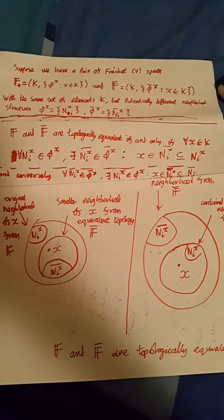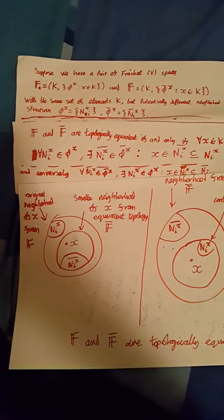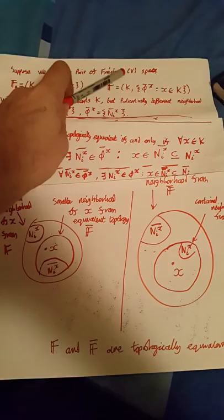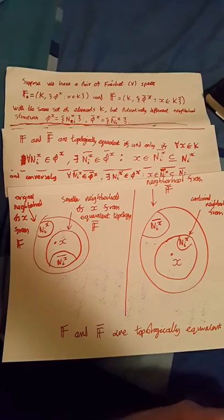One of the things topologists are most interested in is: when are two spaces topologically equivalent? In algebraic topology this often comes down to questions like whether you can continuously deform one shape into another. In the Fréchet V-space setup, we can come up with a nice definition of when two spaces are topologically equivalent — it's a little advanced, but I'll go through the details because it's very interesting.